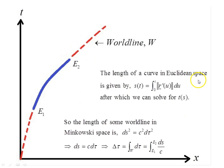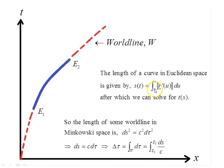Going back to Euclidean space and vector analysis: we have a position vector r, where x, y, and z coordinates are parameterized in terms of time. Taking the derivative and integrating the norm with dummy variable u from 0 to t gives the arc length s as a function of time. We can then invert that to get t as a function of arc length — the length of the curve travelled by the particle — in three-dimensional Euclidean space.